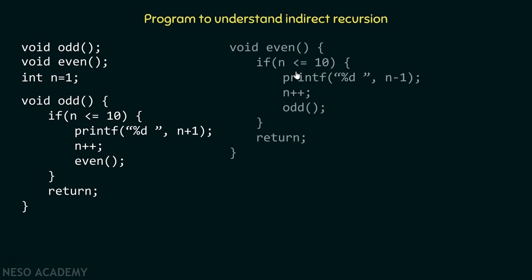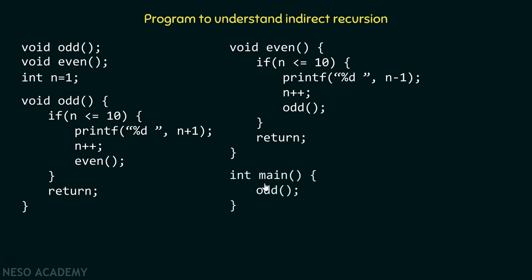Here is the definition of the even function as well. The code is exactly the same as the odd function, but with one difference: instead of n plus one, we have n minus one. After this we have the main function, and inside the main function we are calling the odd function. We call odd first because the first number we encounter is one, which is odd. This is the expected output.